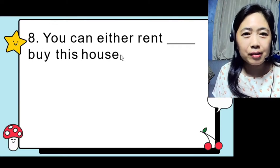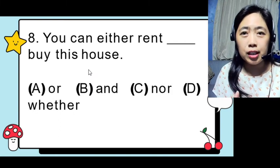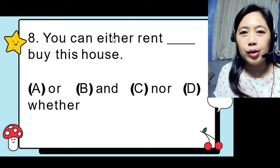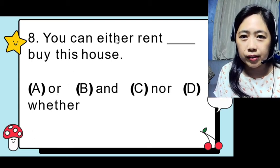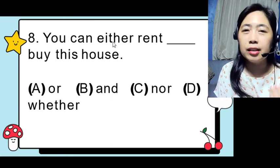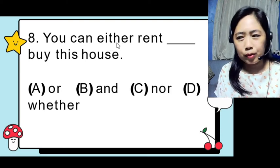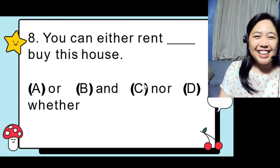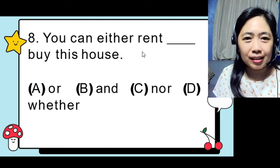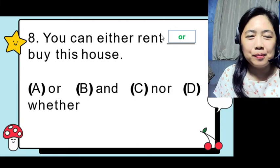Number eight: 'You can either rent ___ buy this house.' For the rule of using 'either' in sentences — if you have 'either,' you use 'or'; if you use 'neither,' you use 'nor.' Since 'neither' is negative, and 'either' is positive, the correct answer here is 'or.' You can either rent or buy this house.